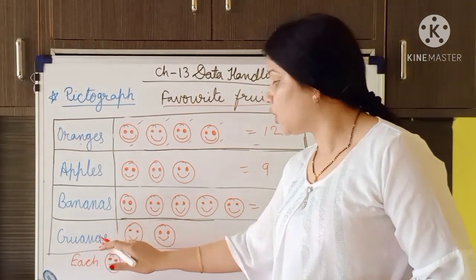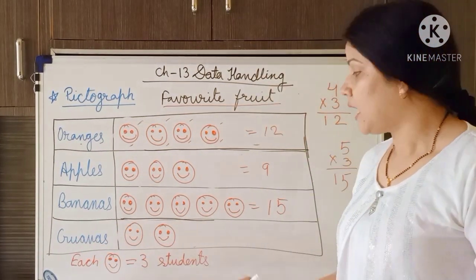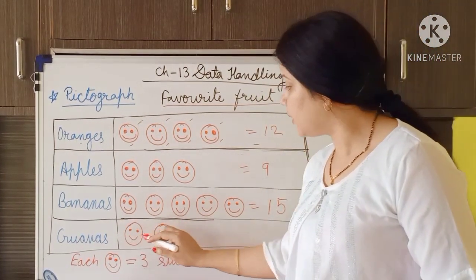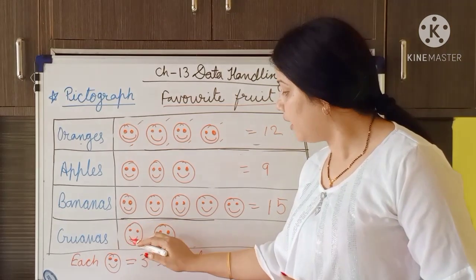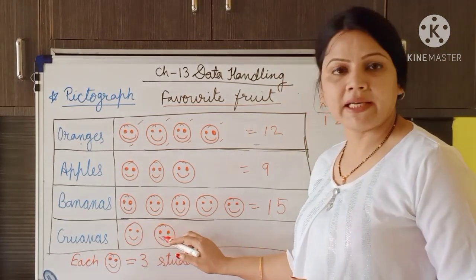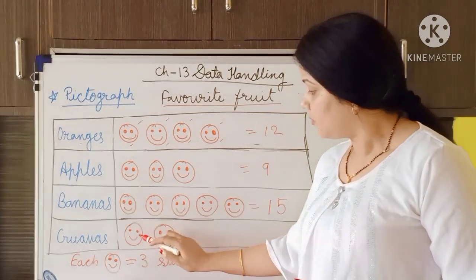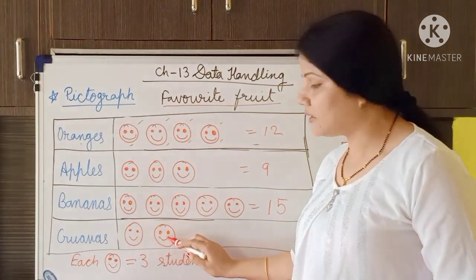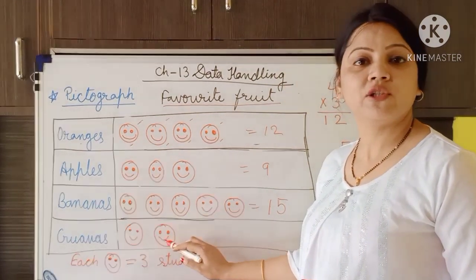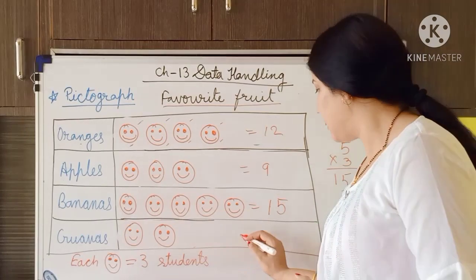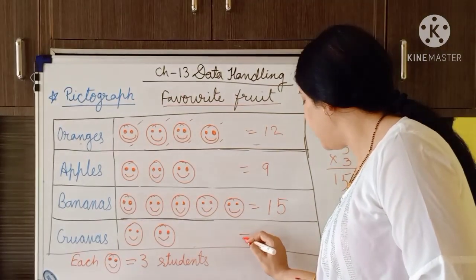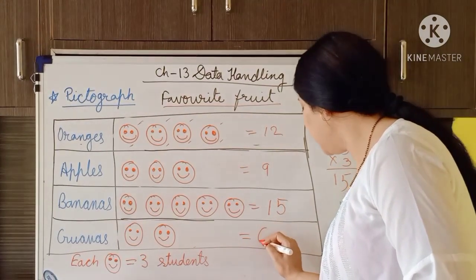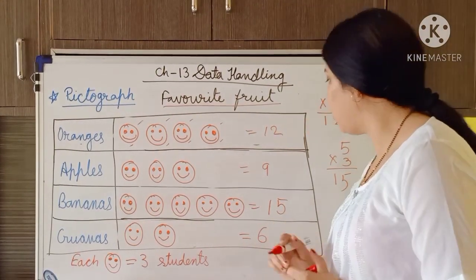The fourth one is guavas. How many students liked guavas? Two smileys are there. Three plus three is equal to six, meaning six students liked guavas.